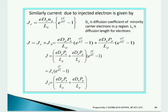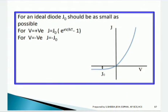Taking common terms outside, J₀ = (e · Dp · pn / Lp) + (e · Dn · np / Ln). This is the final equation for an ideal diode. J₀ should be as small as possible. For positive V, J = J₀ · (e^(eV/kT) − 1), which is positive. For negative V, J = −J₀. This is graphically represented with voltage on the x-axis and J on the y-axis.